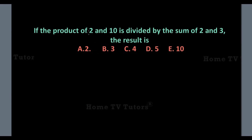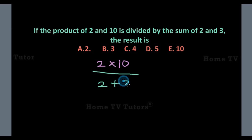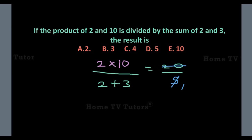If the product of 2 and 10 is divided by the sum of 2 and 3, the result is: 2 times 10 gives us 20, divided by 2 plus 3 which gives us 5. 5 goes into 20 to give us 4. So the result is 4, and the answer option C is the right answer.